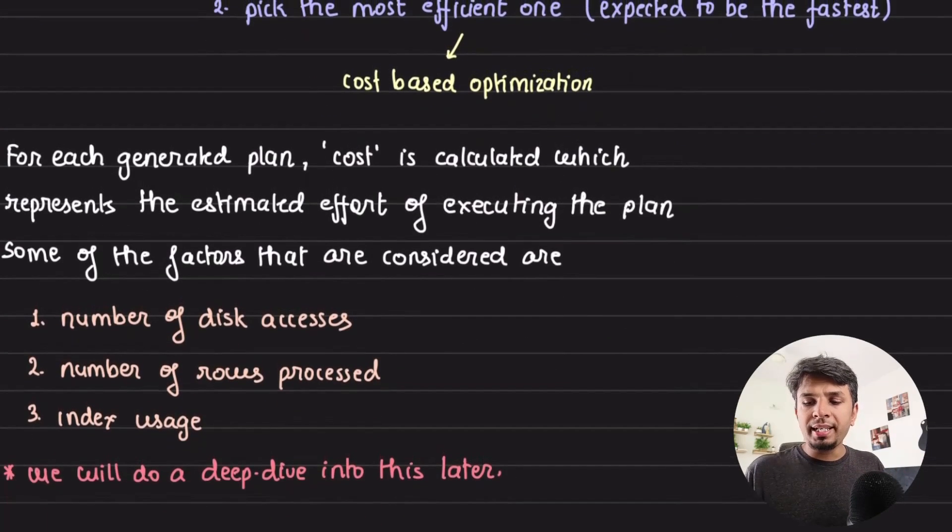For each generated plan, the cost is calculated by considering parameters like the rough estimate of the number of disk accesses, the number of rows processed, or if the right indexes are being used. It does simple numerical estimation to figure out which is the most efficient one. This will be touched upon in subsequent videos.